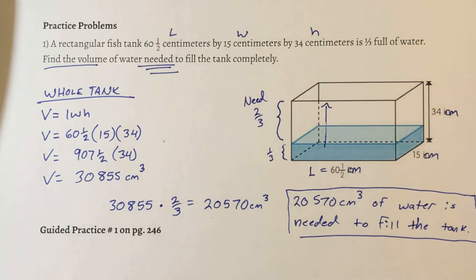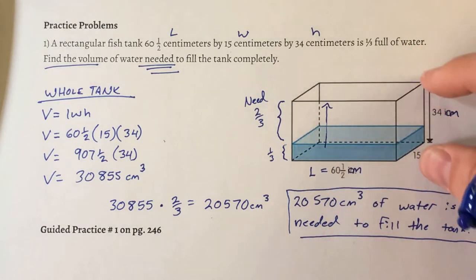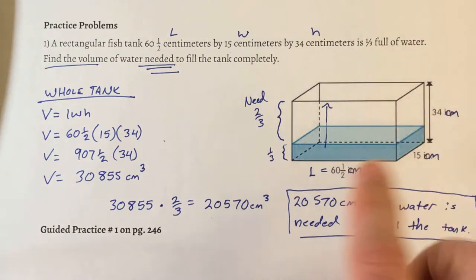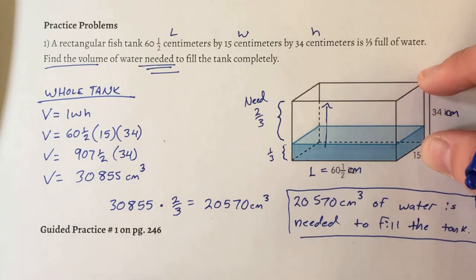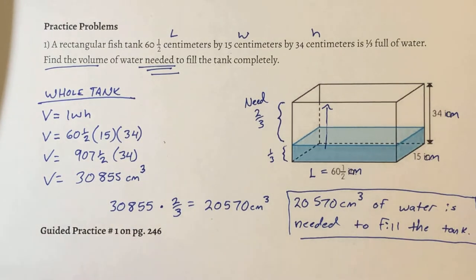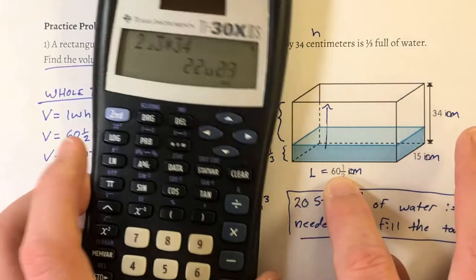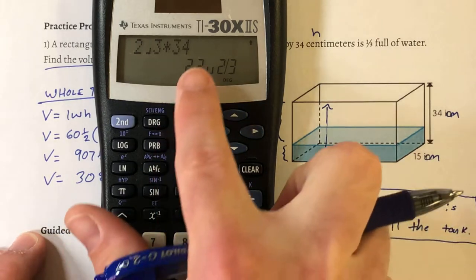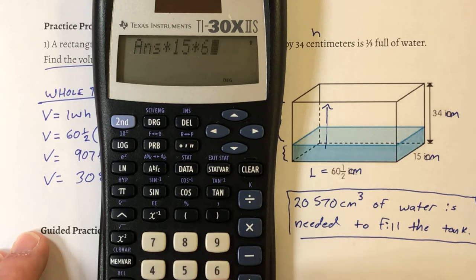There are a few other ways you could approach this. One alternative: since I only need two thirds of the tank filled, the length and width stay the same, but instead of the full height of 34 centimeters, take two thirds of 34, which is 22 and two thirds. Then multiply 22 and two thirds by 15 by 60 and a half, and you still get the same answer: 20,570.